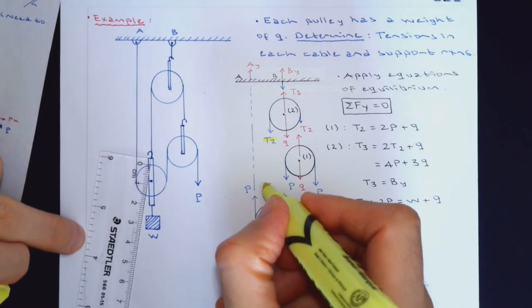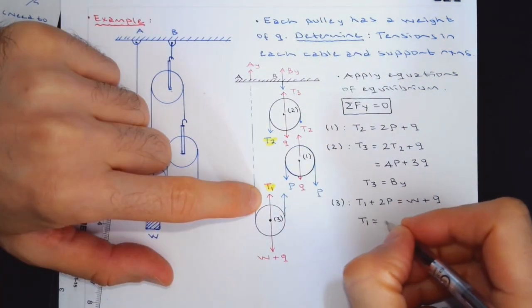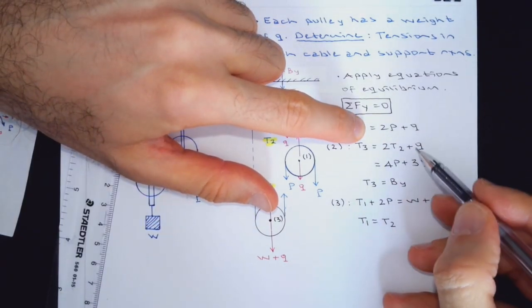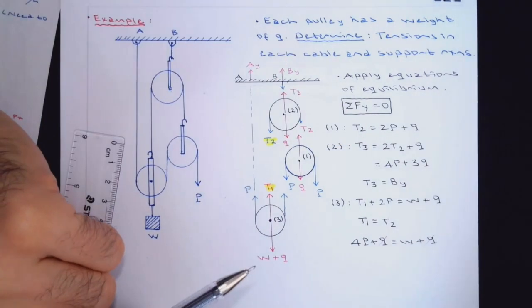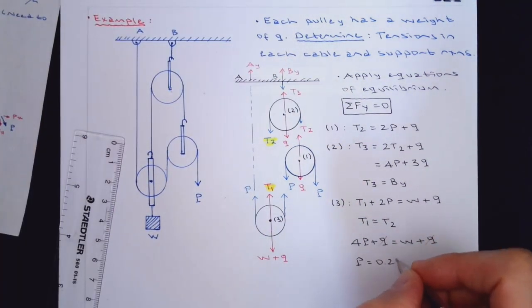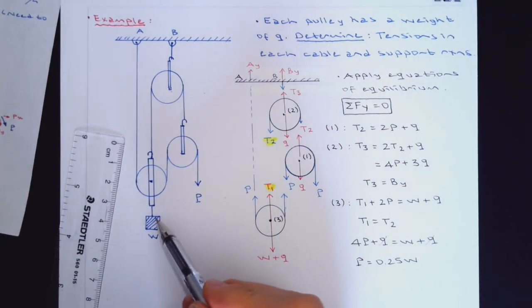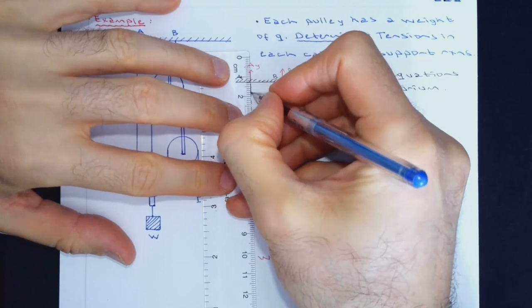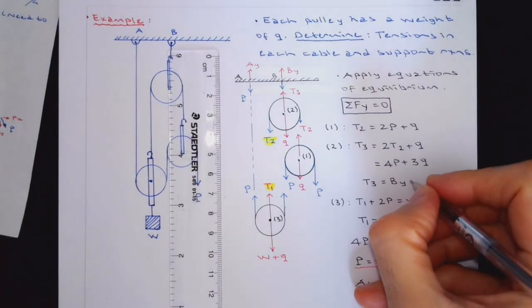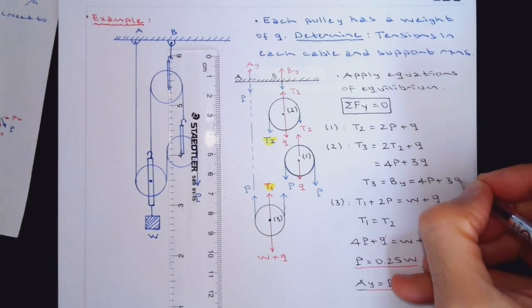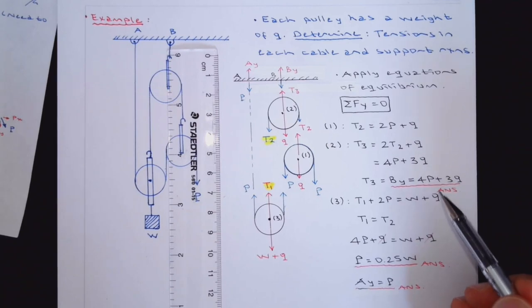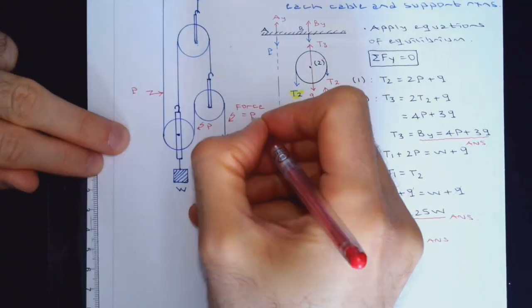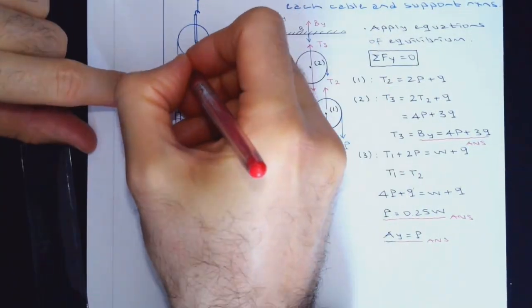And then let's move on to part three. 2P plus T1 equal to W plus Q. We didn't need to use two unknowns. You will see that it is the same force. T1 equal to T2. If you sub T2 into this one, 2P plus 2P, 4P plus Q would be equal to W plus Q. These would cancel out. P equal to 0.25W. Meaning that I have to apply a quarter of this weight in terms of force. And also, from part three, I can show that P is the same as AY. If you want, just to clarify, BY equals 4P plus 3Q is the answer. Right now, I'm done with the question.